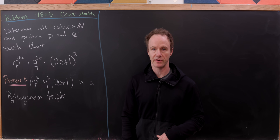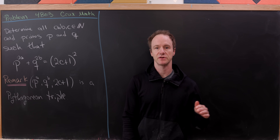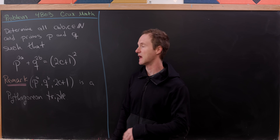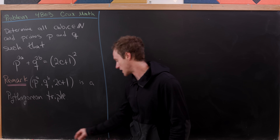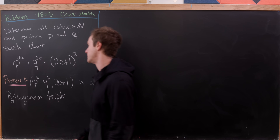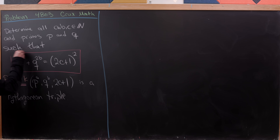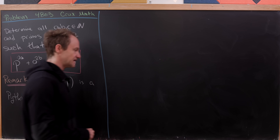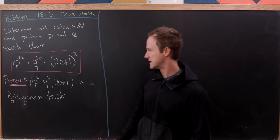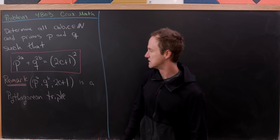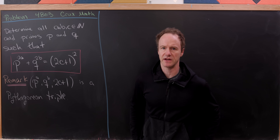Today we're looking at a nice quick number theory problem. Our goal is to determine all natural numbers a, b, and c, and then primes p and q, satisfying this equation: p to the 2a plus q to the 2b equals (2c + 1) squared. Now I'd like to make a quick observation: p to the a, q to the b, and 2c + 1 form something known as a Pythagorean triple.